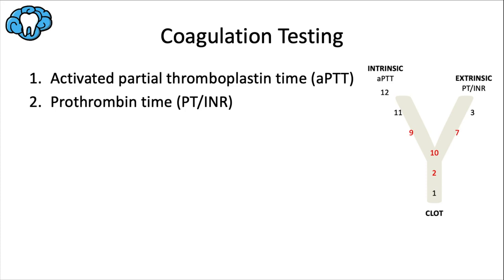The activated partial thromboplastin time (aPTT) test measures the number of seconds for a clot to form in a blood sample after certain reagents are added. It checks the intrinsic system and common pathway, making it the best single screening test for coagulation disorders. It's used to test von Willebrand disease, hemophilia, and others. The normal range is 25–35 seconds; a shorter time indicates a clotter, a longer time indicates a bleeder.